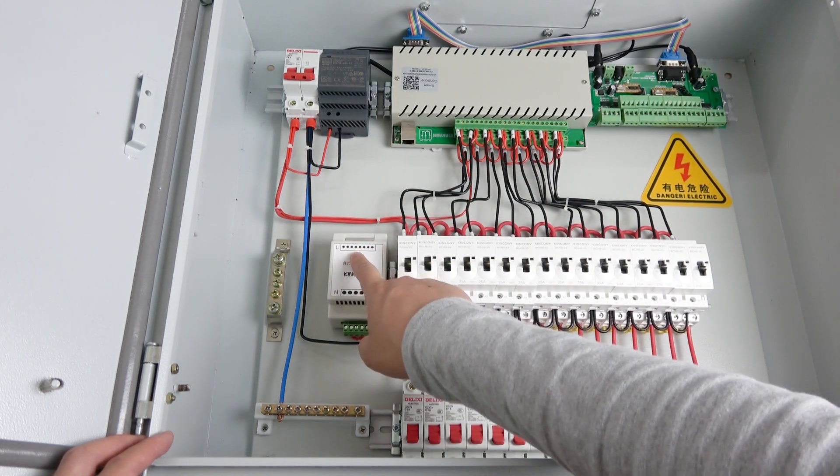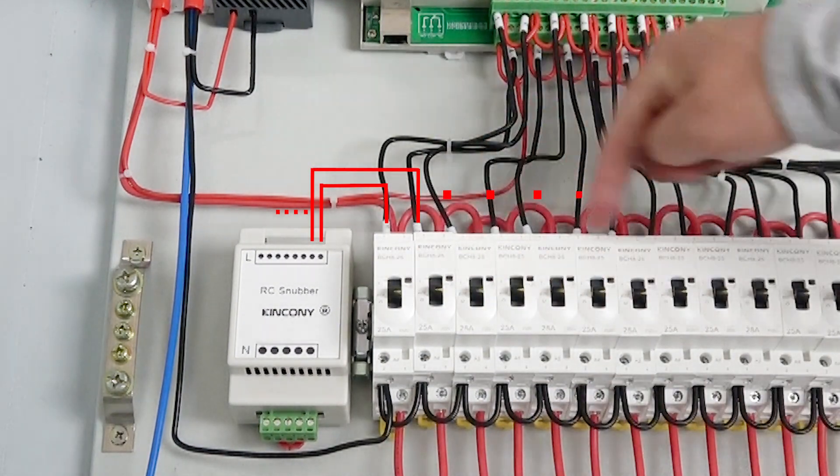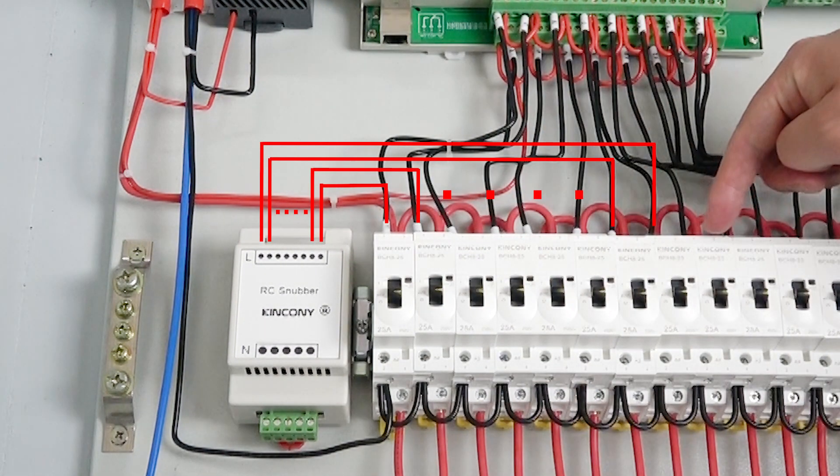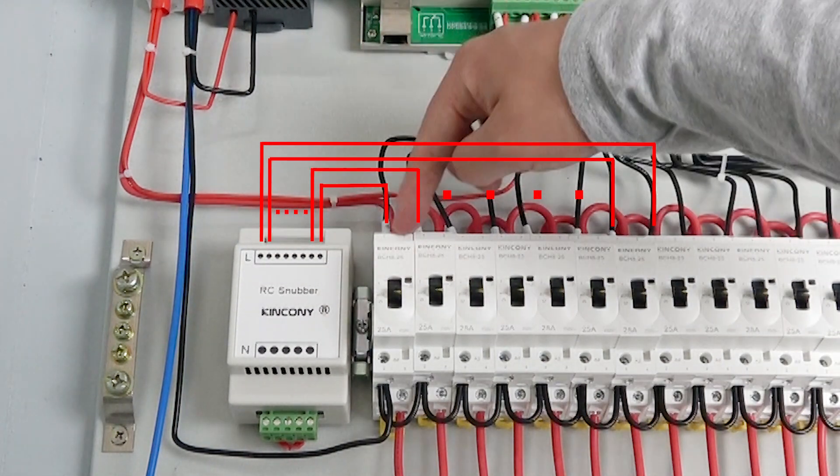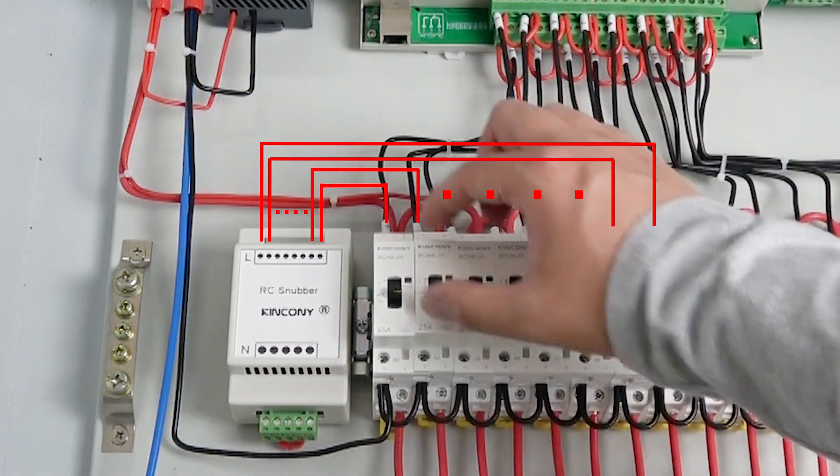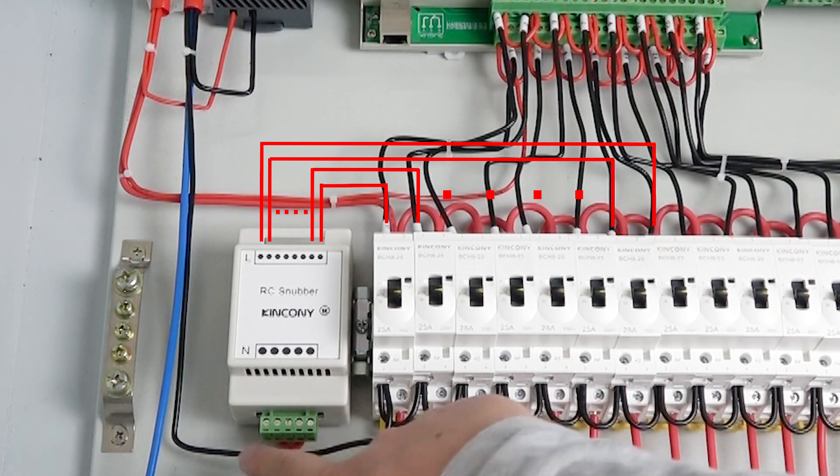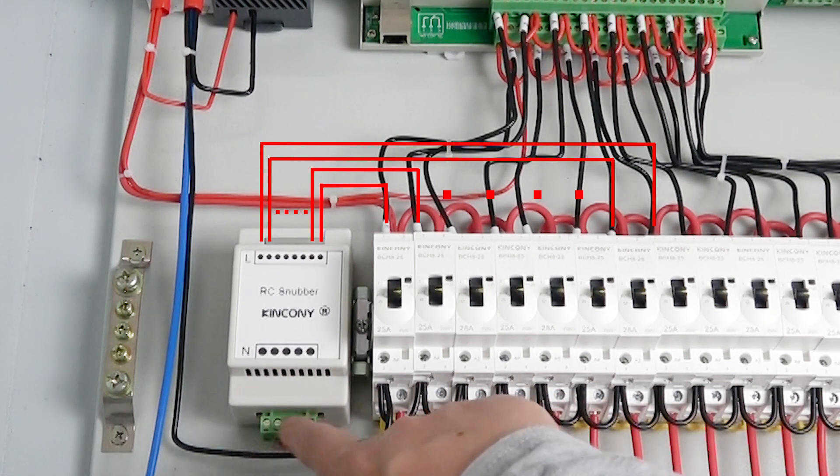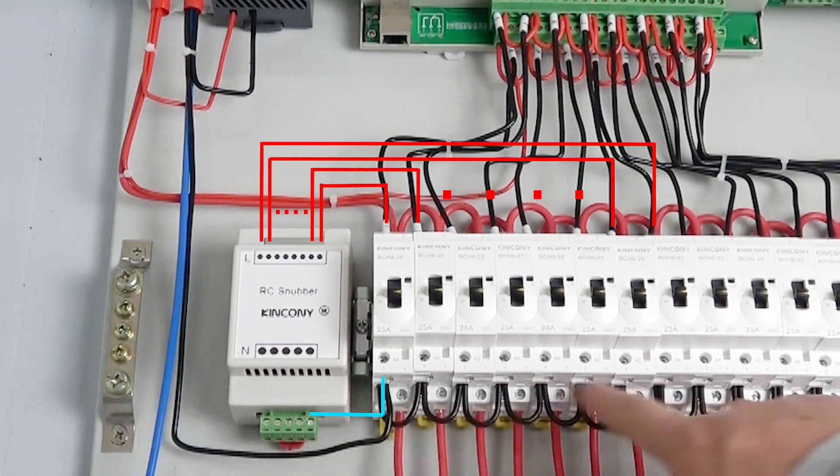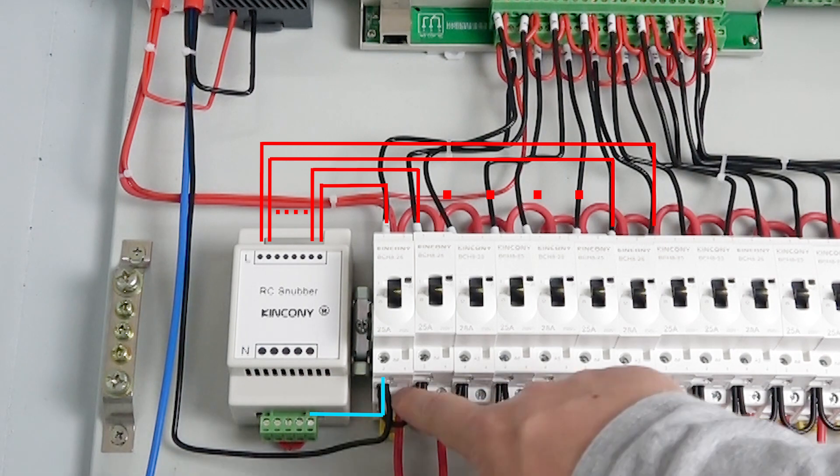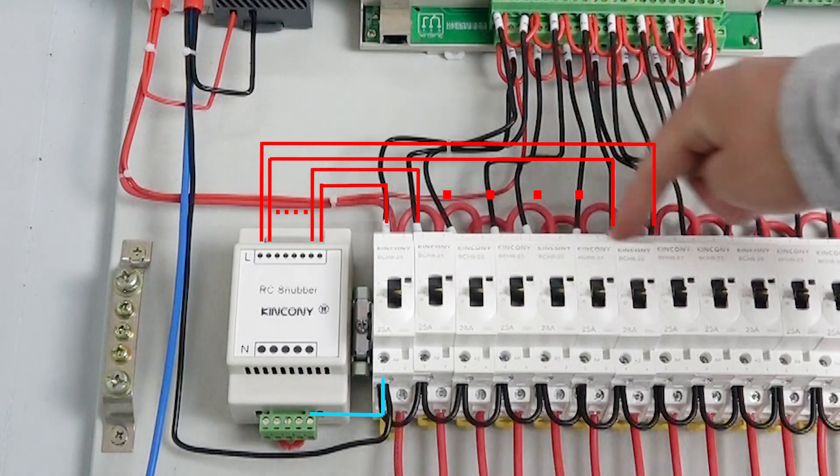And this L connect with A1, A2, A3, and until A8. So this L connect with A1. Each AC contactor is A1. And this is a neutral line. Because this has five holes, but all is together. So you just can use one line to connect with the neutral line. Just use one line. And this need independently connect with A1 for every AC contactor.